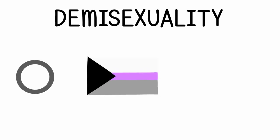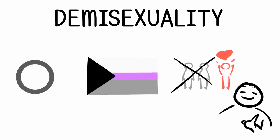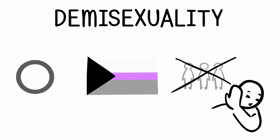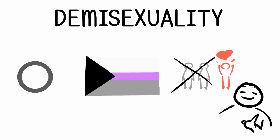Eight: demisexuality. Demisexuality can technically fall under the asexual umbrella. People who are demisexual do experience sexual attraction, but only after an emotional connection is created. They wouldn't find a stranger on the street sexually appealing, but after they get to know someone well, the possibility of sexual attraction is there. Demisexuality is considered the halfway point between asexuality and allosexuality — those who experience sexual attraction.